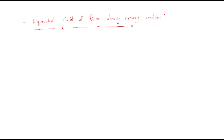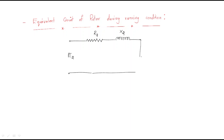Next: equivalent circuit of the rotor during running condition. During running condition, the rotor also induces EMF represented as E2. The winding has resistance R2 and leakage reactance X2. The relation is: E2 equals s times E2-naught (rotor induced EMF at standstill), and the rotor reactance X2 equals s times X2-naught. Rotor resistance always remains constant.